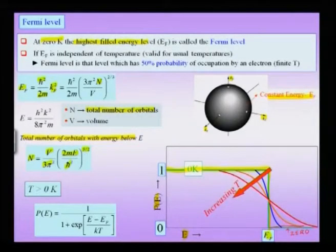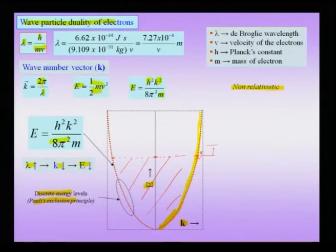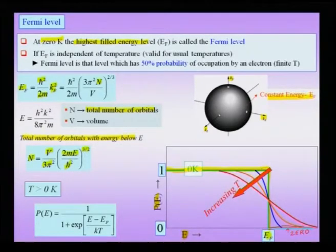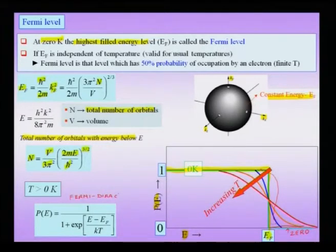Suppose we heat this specimen above 0 Kelvin. With increasing temperature, more and more electrons are excited to higher energy levels, and there is no barrier to this excitation because the energy levels are closely spaced and just above the Fermi level. This implies that the probability of finding an electron above E_F increases, while the probability below the Fermi level slightly reduces. The probability of finding an electron at any finite temperature is given by the Fermi-Dirac function.